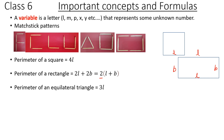Perimeter of an equilateral triangle. An equilateral triangle has three equal sides. Let's say the side length is L. So that is 3L.